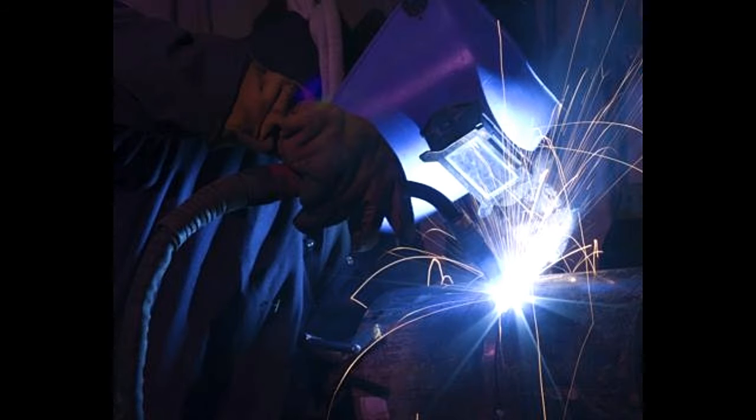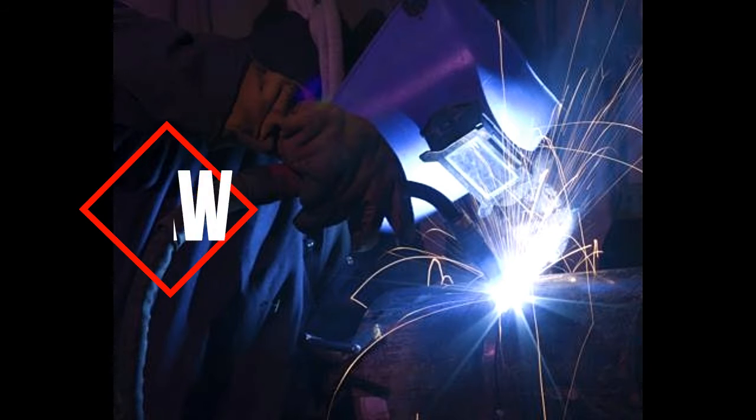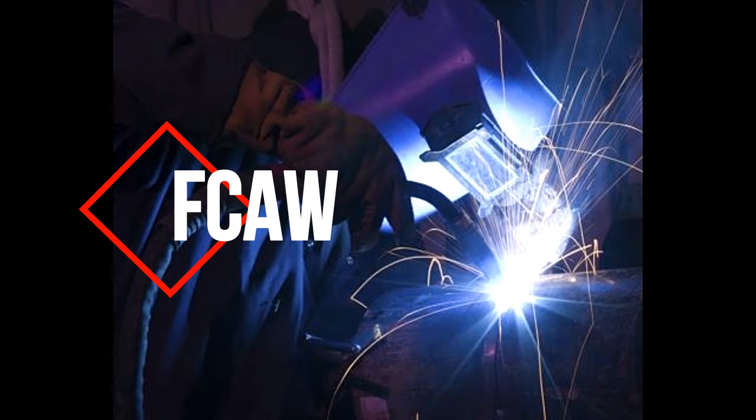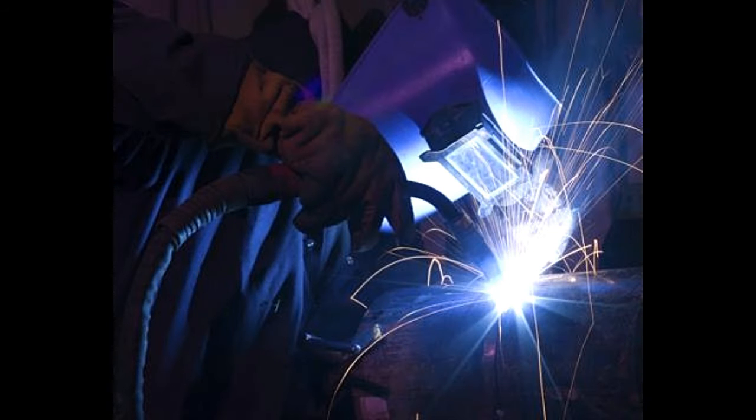Flux-cored arc welding is a process that uses a tubular electrode, in which the outer shell is made of the electrode metal, while the inner hollow is filled with flux. This flux melts to form a protective coating of slag around the weld pool and also gives off a shielding gas.